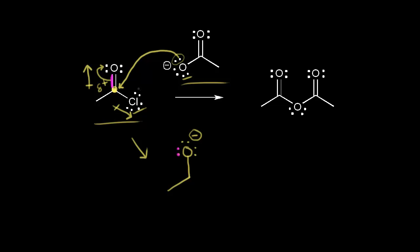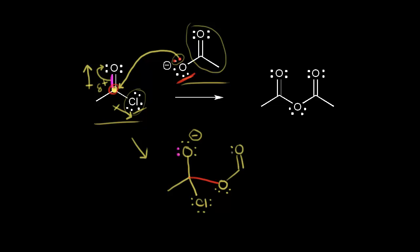I still have this chlorine attached to this carbon, so let me draw in that chlorine with its three lone pairs of electrons. We've formed a new bond between this oxygen and this carbon — let me highlight these two electrons in red. Those two electrons in red form a bond between that oxygen and this carbon, and this oxygen still has two lone pairs of electrons. We also have a carbonyl, with lone pairs of electrons, and a methyl group coming off. So the first step of this mechanism is a nucleophilic attack — the nucleophile attacks the electrophile.